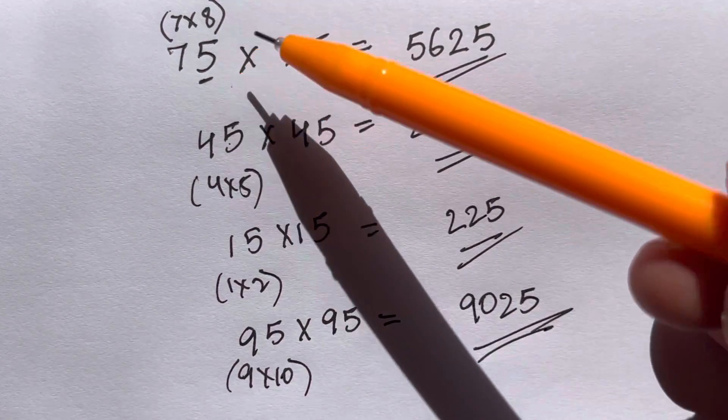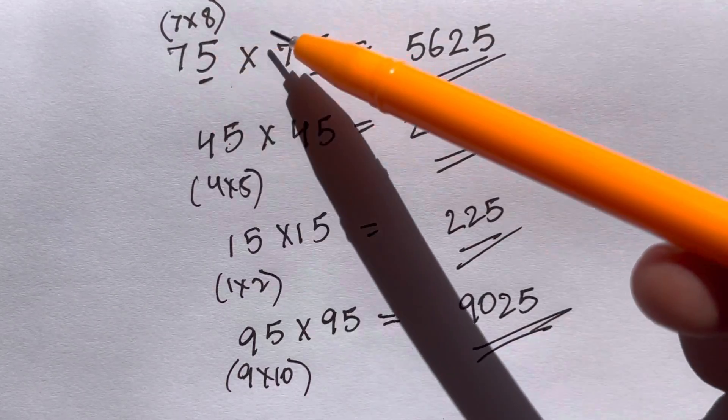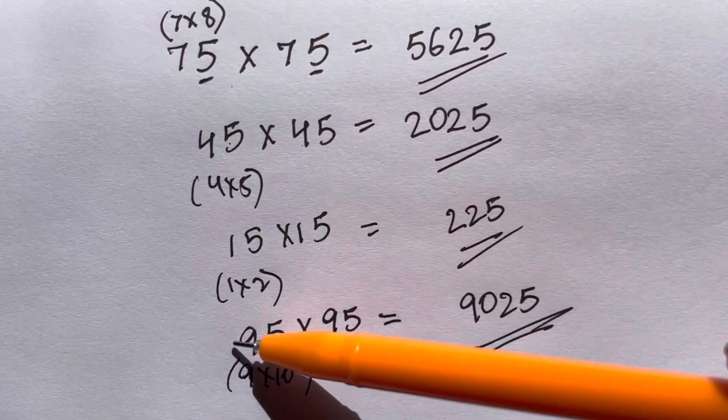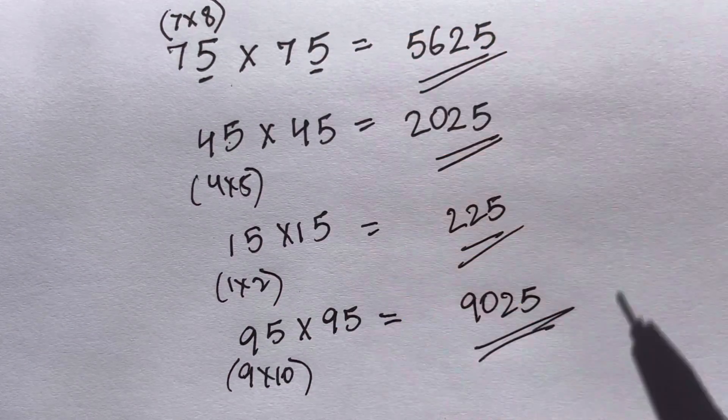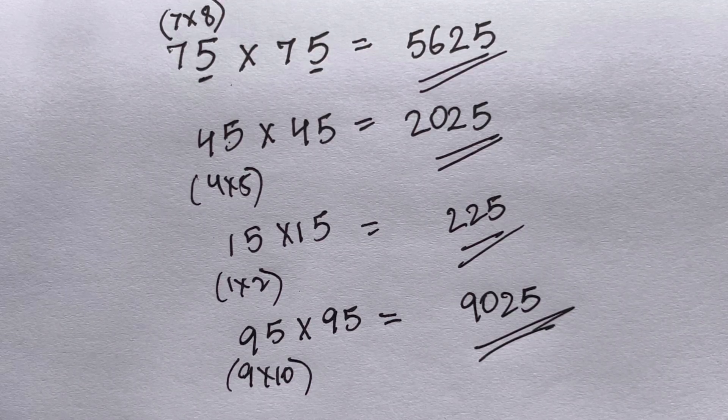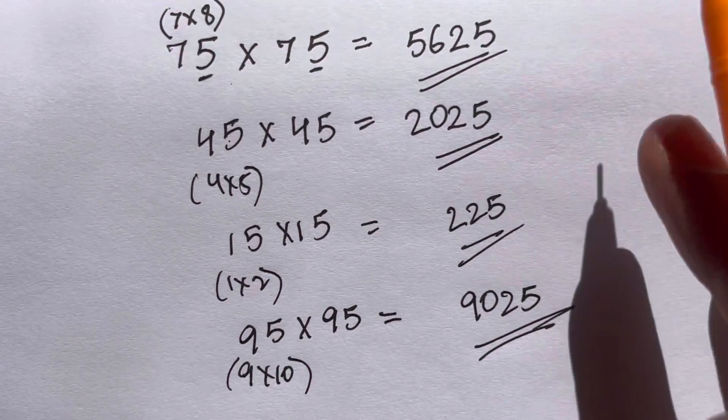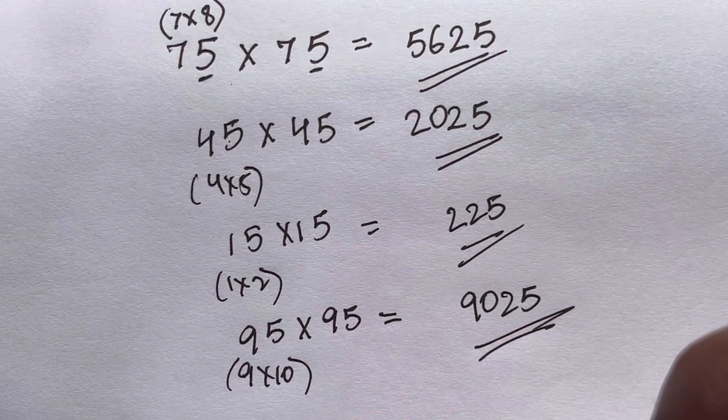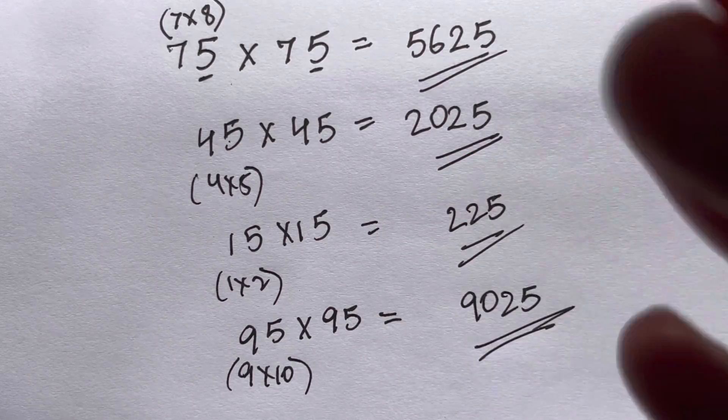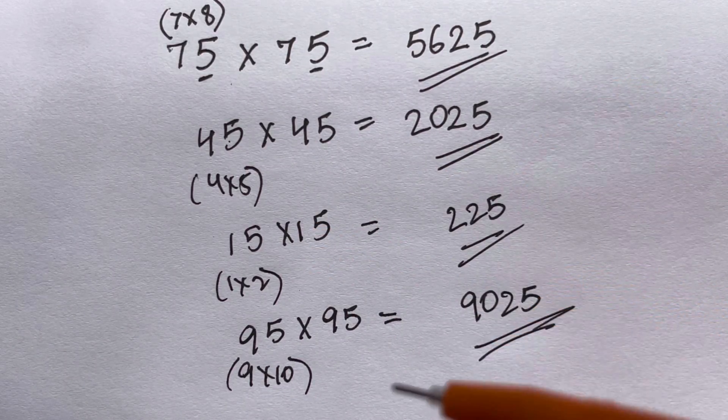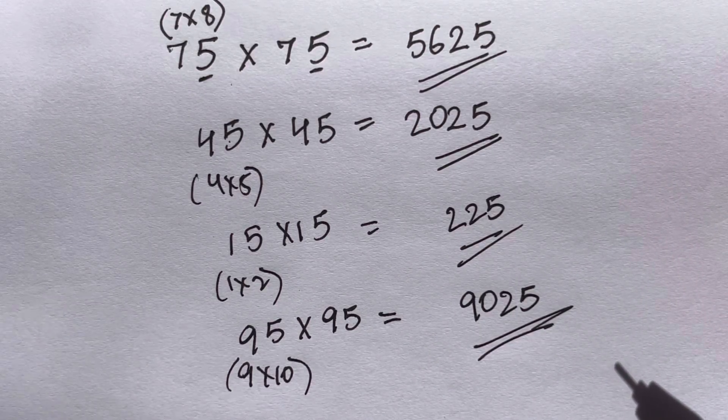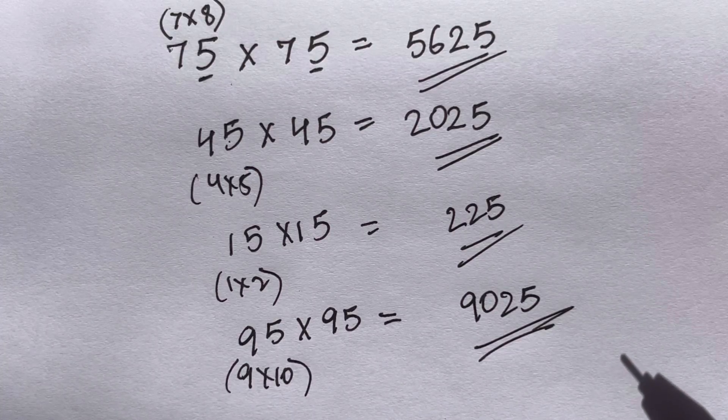This is the trick when you have numbers ending in 5 with the same starting number—like 75 times 75, 4 and 4, 1 and 1, 9 and 9, ending in 5. This same trick also works with numbers with the same starting digit (same tens digit) when the ending digit adds up to 10. When the sum of the ones digit is 10, you can apply this. Let's see.